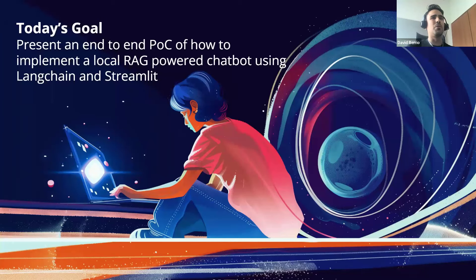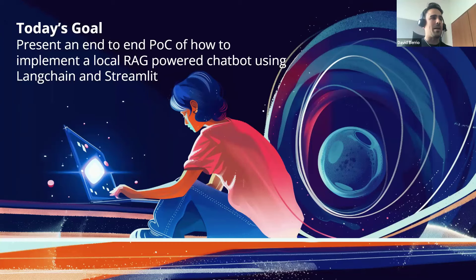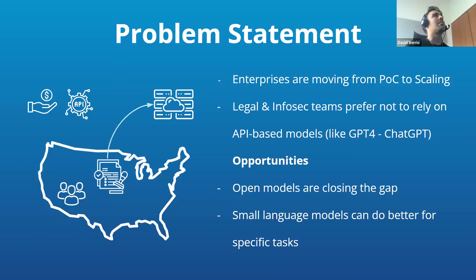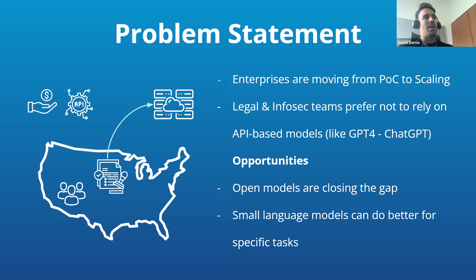One of the main things people ask is: why should we bother doing this when we have ChatGPT and all these flashy models we can interact with easily through APIs or assembled products? There are definitely many reasons why this is important. First, I think 2024 is going to be the year when enterprises start moving from POCs to production development.